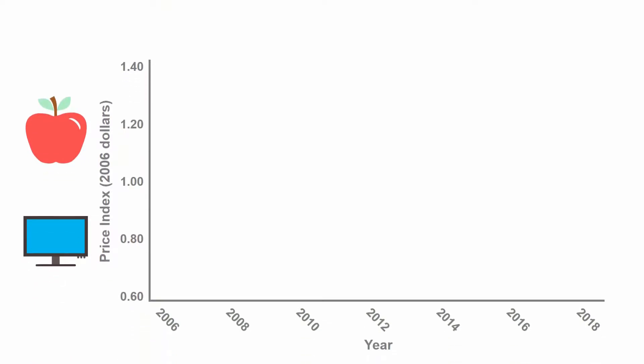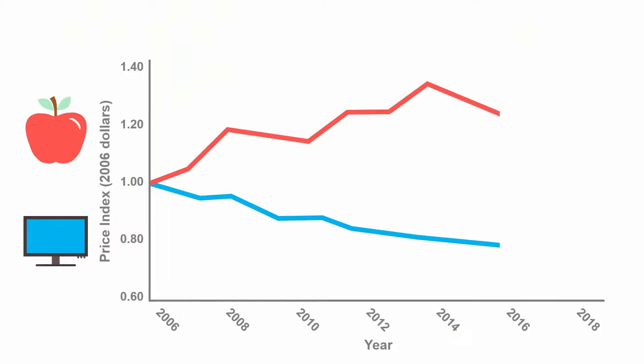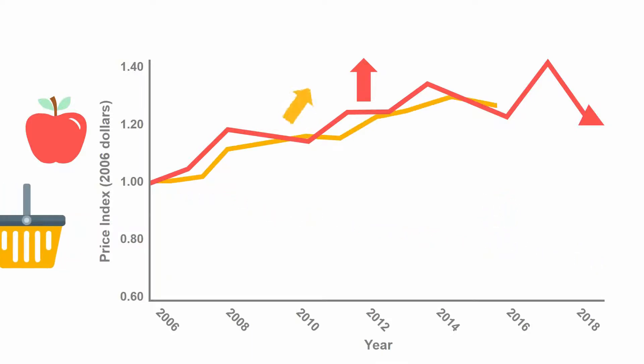However, when developing a realistic cost estimate, an analyst cannot just use any escalation rate to predict the price change for a product. Notice how the escalation rate for apples increases over time, while the escalation rate for computers decreases. Rather than use the escalation rate for computers to forecast the price change in apples, an analyst could use a proxy escalation rate, such as the rate for other fresh produce or the cost of apple-picking labor.